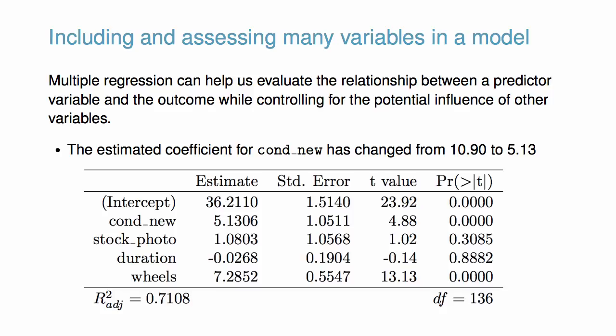This is a result of predictors being correlated with each other. For example, auctions for new games tend to come with more accessory wheels than auctions for used games.